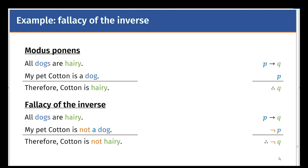However, it is invalid to say all dogs are hairy, my pet Cotton is not a dog, therefore Cotton is not hairy. You can verify this by drawing an Euler diagram. In the fallacy of the inverse, it is invalid because Cotton is not a dog doesn't mean that Cotton will not necessarily be hairy.